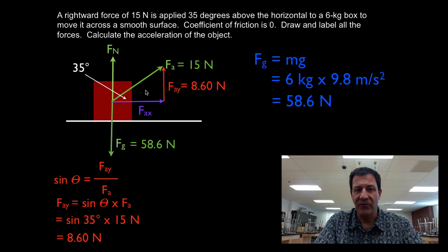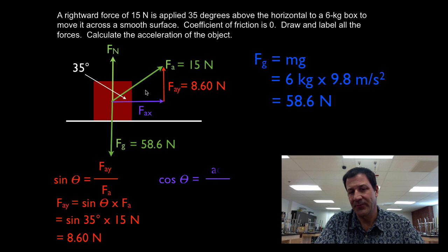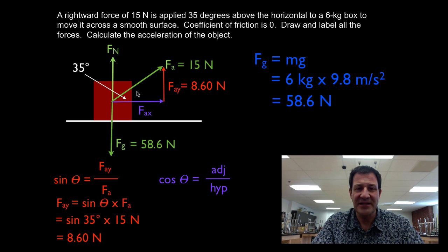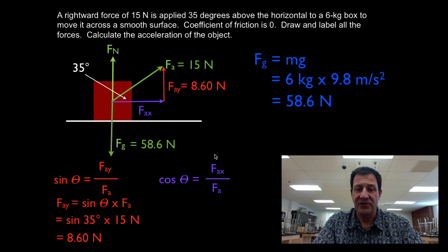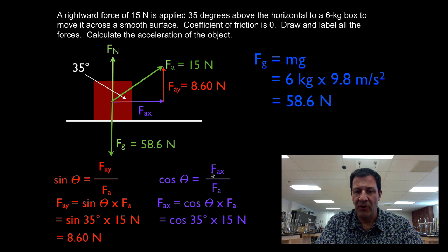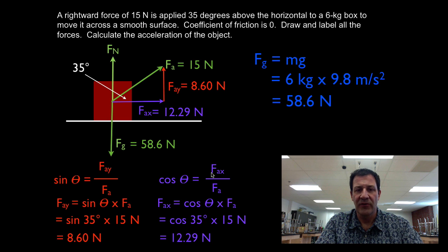Now we calculate FAX, the component of the applied force in the x direction, using cosine. Cosine is adjacent over hypotenuse. With the angle at 35 degrees, FAX is adjacent to that angle, and the hypotenuse is the applied force. So FAX equals cosine of 35 times 15, giving 12.29 Newtons.